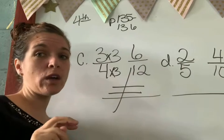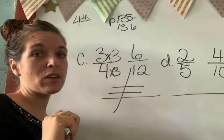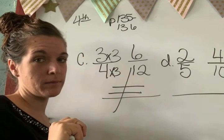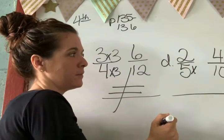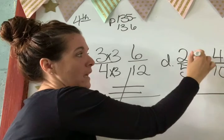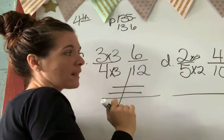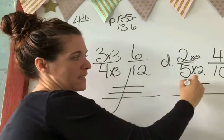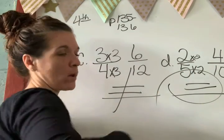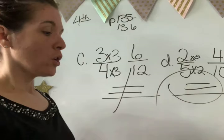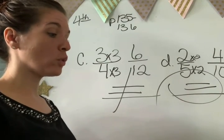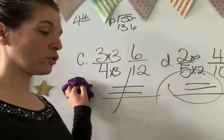Okay, go ahead and try letter D by yourself and then we'll check it. Okay, raise your hand if you got equivalent. Raise your hand if you got not equivalent. Okay, let's check it. 5 times what equals 10, Holly? 2. Is 2 times 2 equal to 4, Holly? Yes. So these are equivalent.